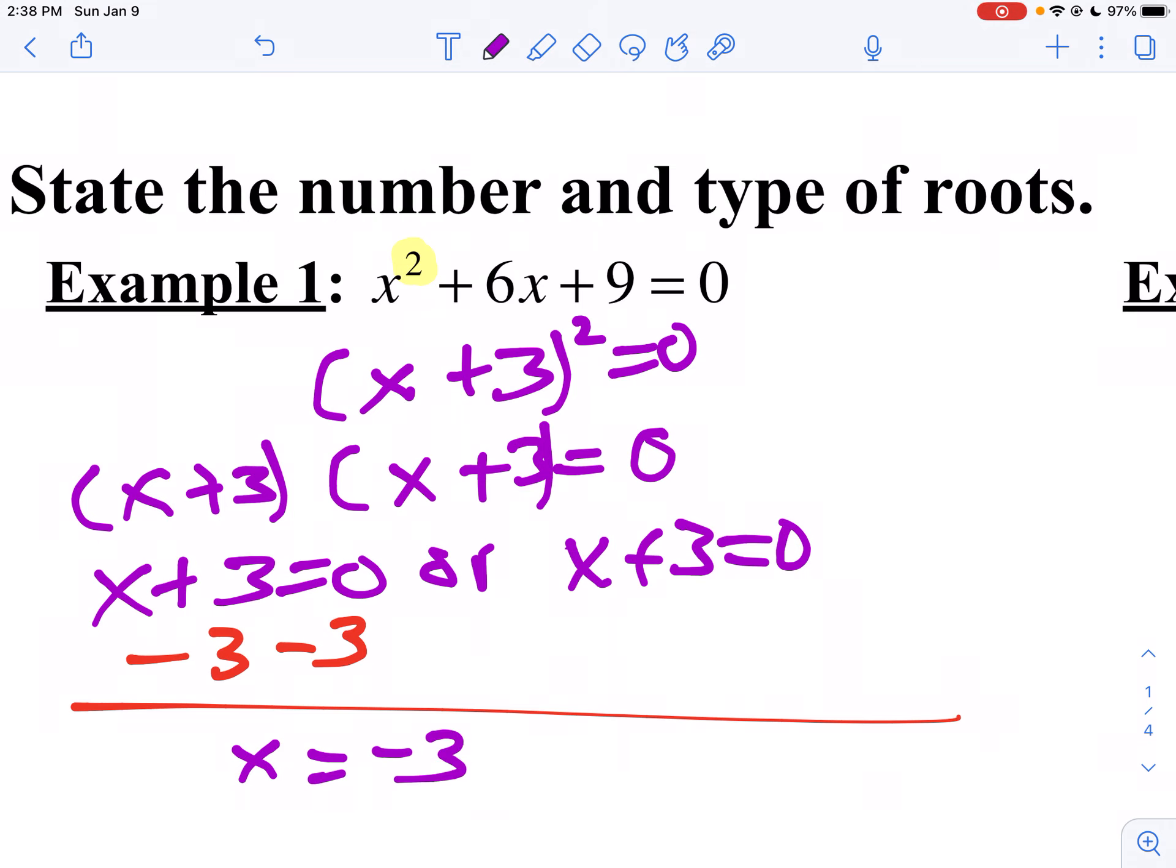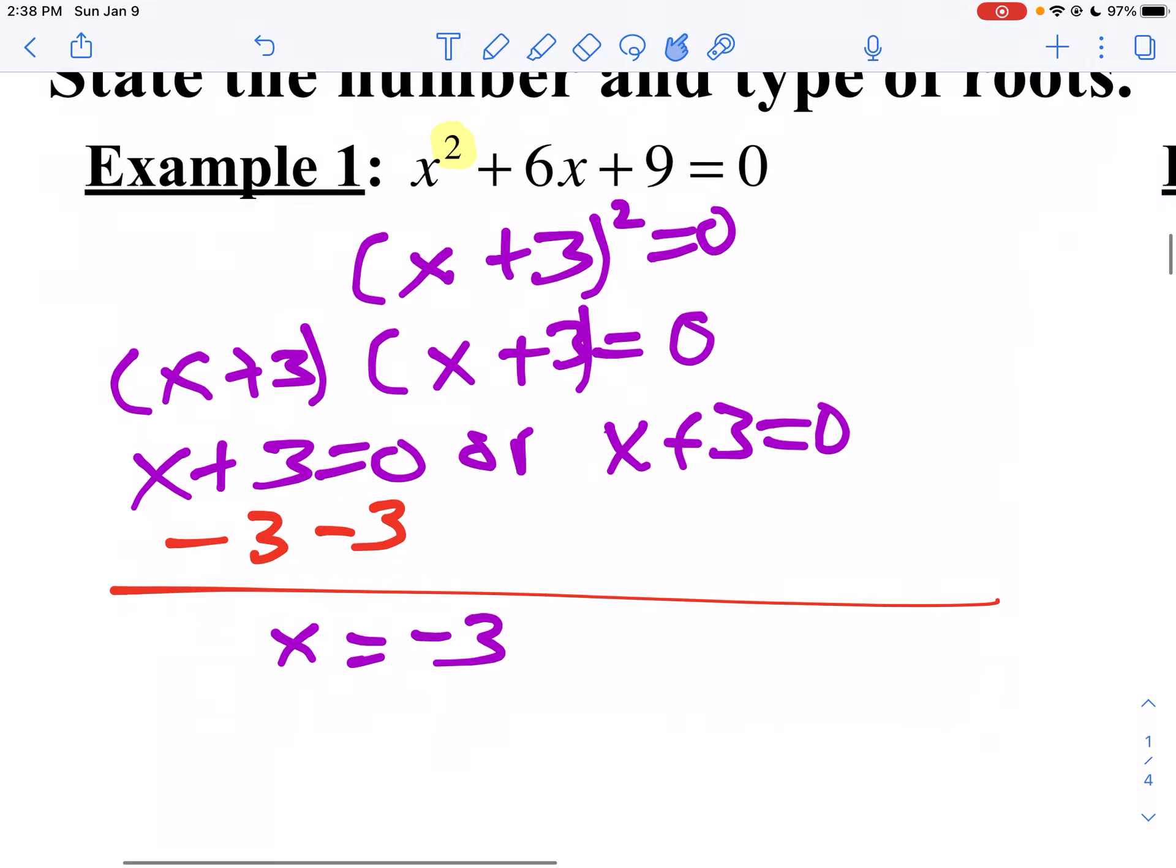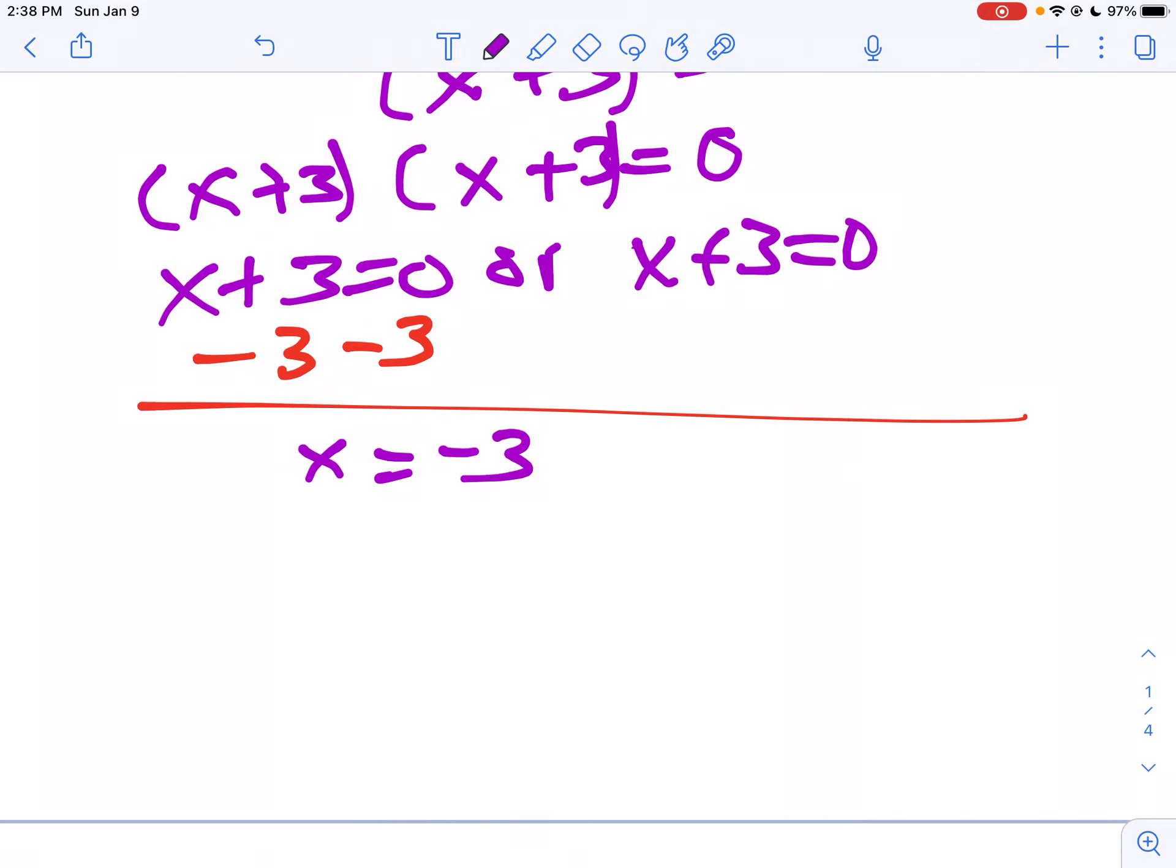This is what we call a double root because it happens twice. So I'm going to say I have one real, because -3 is a real number, one real double root. Since I have two roots, but they're the same, so we call that a double root.